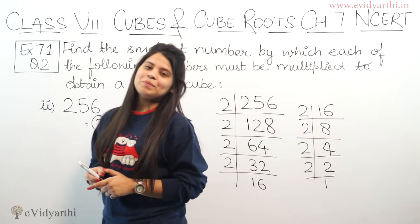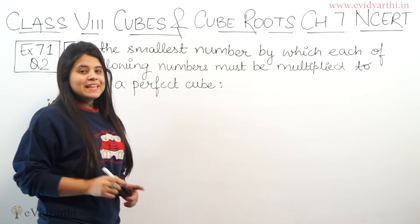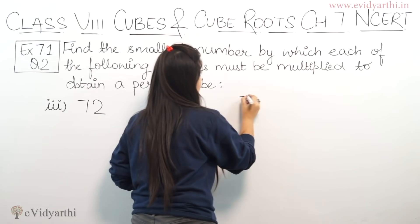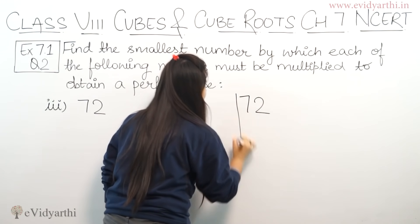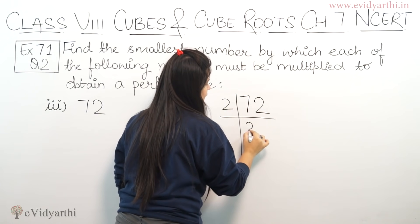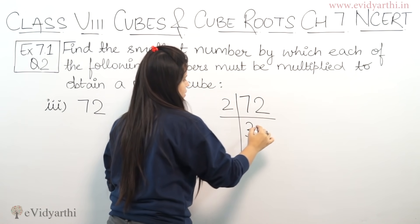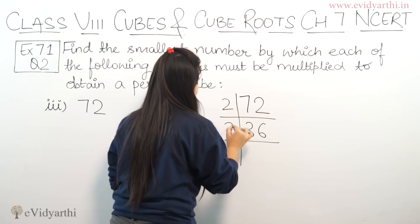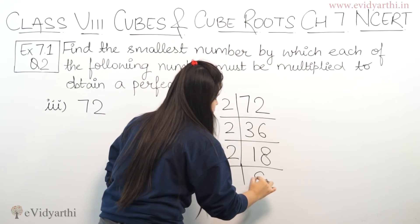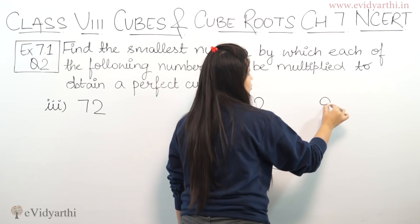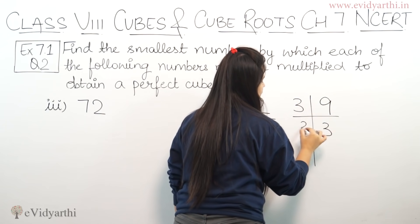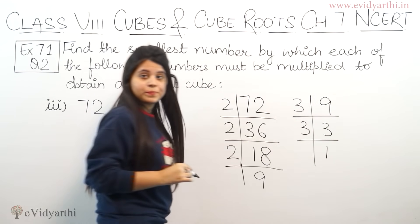Now coming to the third part. The number is 72. Let's prime factorize this. Dividing 72 by 2 gives 36. Again by 2 gives 18. Again by 2 gives 9. Then 9 divided by 3 gives 3, and 3 divided by 3 gives 1.